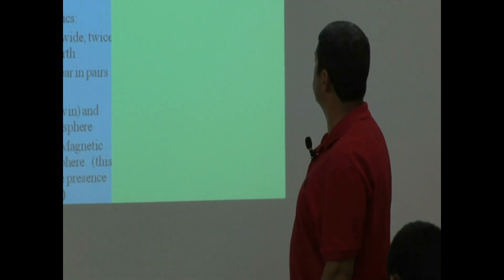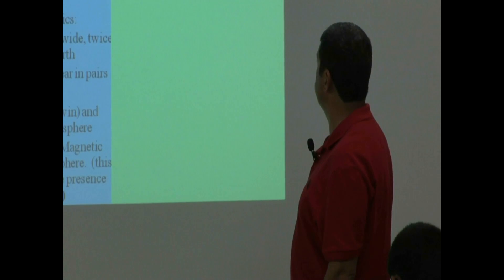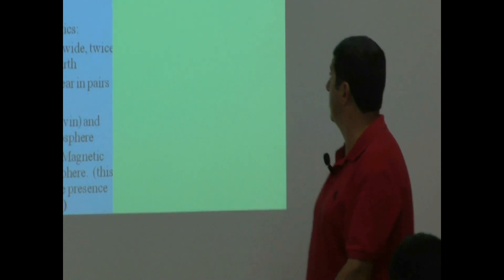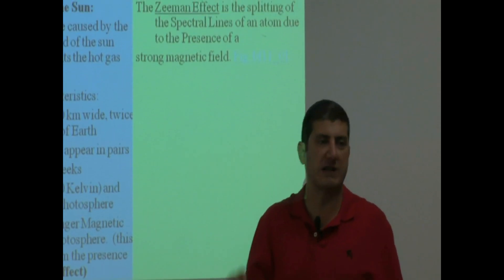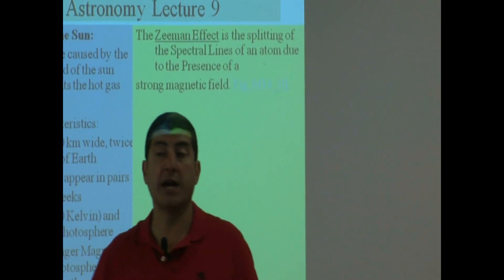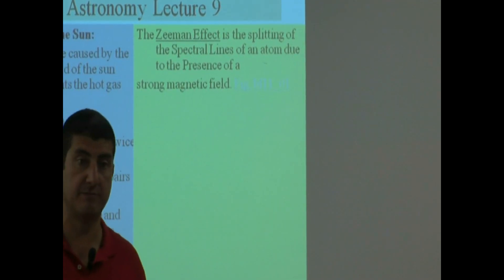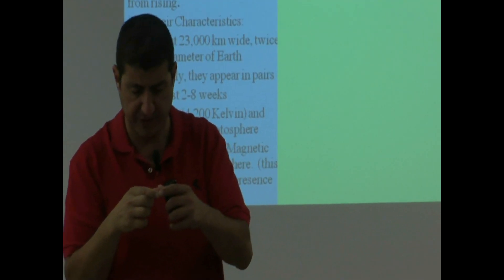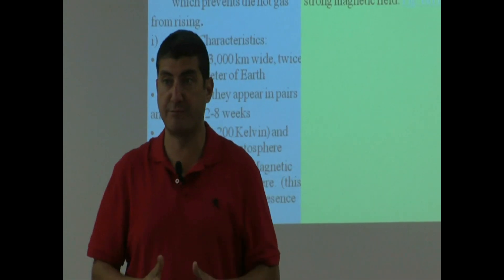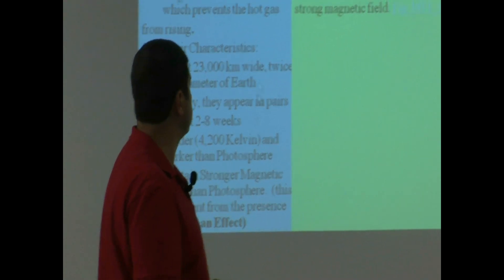So, Zeeman effect is the splitting of the spectral lines of an atom due to the presence of a very, very strong magnetic field. And, when we observe the spectral lines of hydrogen and helium and the other elements inside of this photosphere, we find that they have been split. Let me show you what that split means.